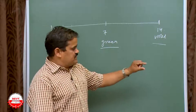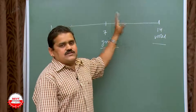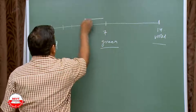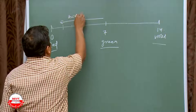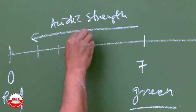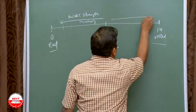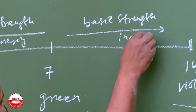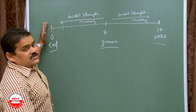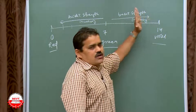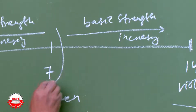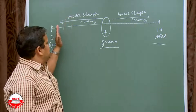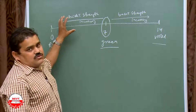You match the solution's color with the pH color chart to find which pH value it corresponds to. From 0 to 7 are the acidic regions — acidic strength goes on increasing as pH decreases toward 0. As the pH value increases from 0 to 7, acidic strength goes on decreasing.